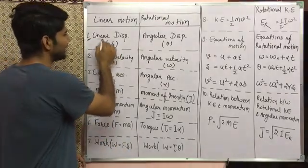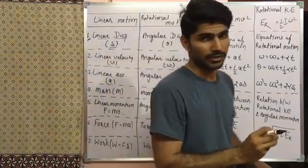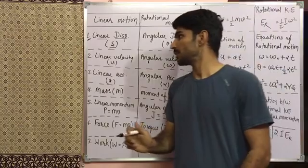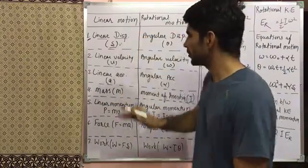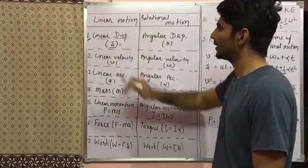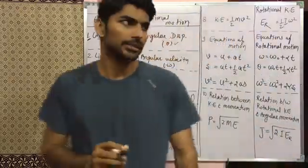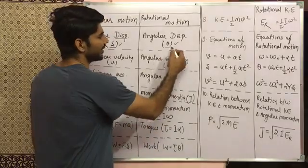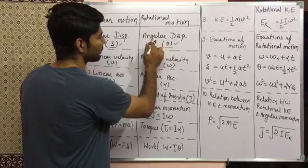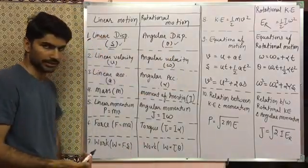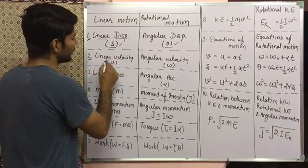The first point is displacement. In linear motion we start with linear displacement, denoted by a small 's'. In rotational motion, like linear motion, we have angular displacement, which is denoted by theta. So in linear motion we have linear displacement and in rotational motion we have angular displacement.